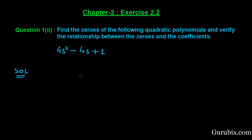The given polynomial is 4s² minus 4s plus 1. Since the variable of this polynomial is s, we shall denote it by p(s). So p(s) is equal to 4s² minus 4s plus 1.